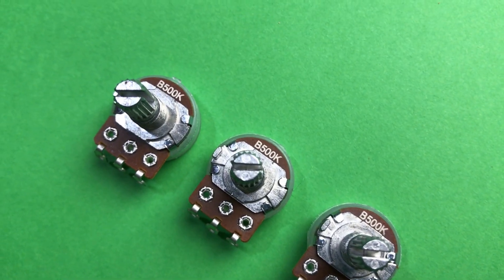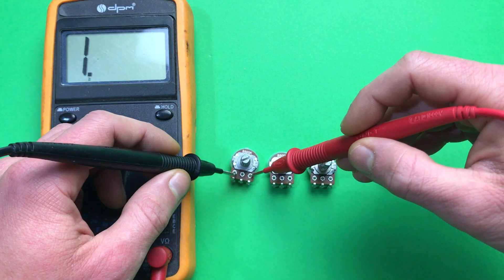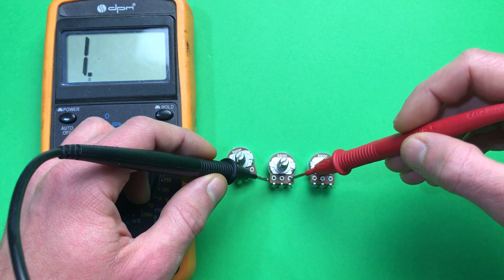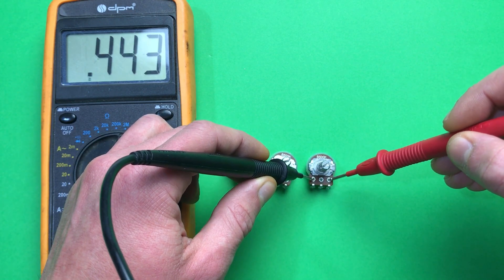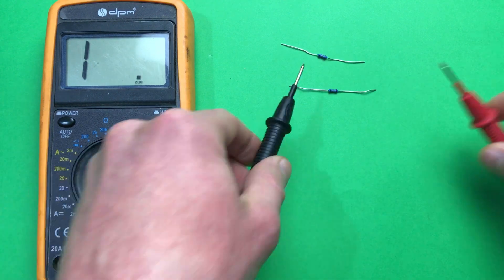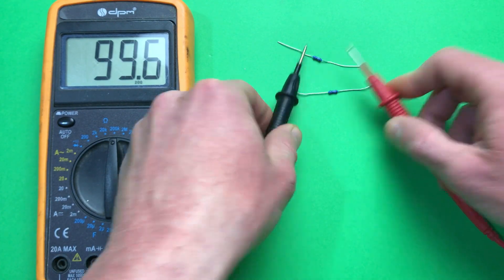Also in this video I would like to mention parts tolerance. Here you can see three 500 kilohm potentiometers. As you see, the exact value of each is different. That means even if you're comparing two of the same pedals, they can sound a bit different, especially ones made from older parts.